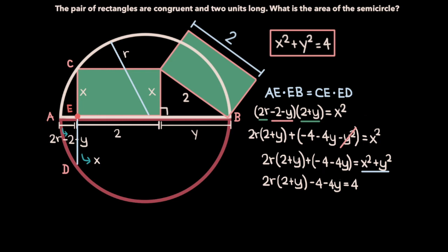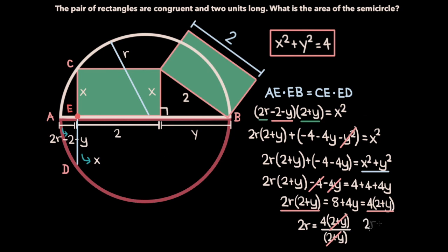Now recall we're looking for the area of the semicircle here. To find the area, we're going to need the radius. So the variable we're solving for here is r. To isolate r, let's add 4 and 4y to both sides of the equation, so that will get rid of this negative 4 and negative 4y on the left-hand side, and on the right-hand side, we'll have plus 4 plus 4y. So now we have 2R times 2 plus y is equal to 8 plus 4y. Notice that we can factor out a 4 from the right-hand side of the equation, and we get 8 plus 4y is equal to 4 times 2 plus y. If we divide both sides of this equation by 2 plus y, we get 2R is equal to 4 times 2 plus y divided by 2 plus y. We can cancel out the 2 plus y term in the numerator with that term in the denominator, and we're left with 2R is equal to 4.